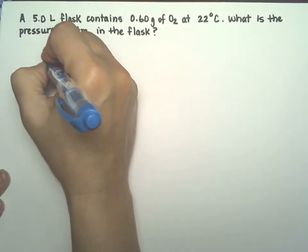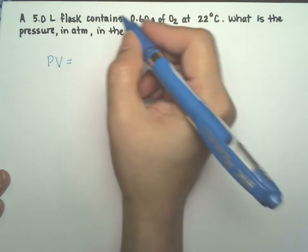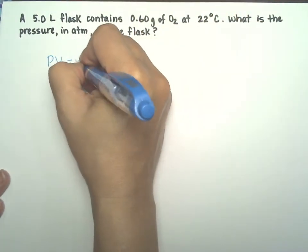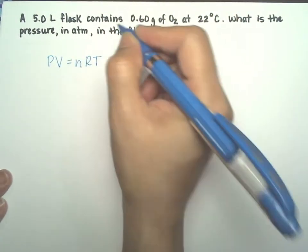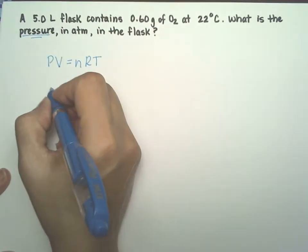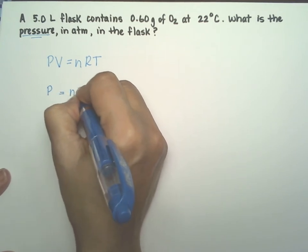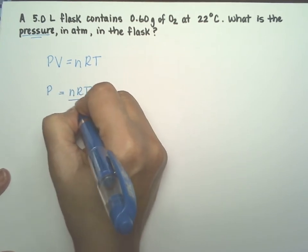This is a problem for the ideal gas equation. PV equals nRT. We're going to solve for pressure because that's what they're asking us. So we're going to get rid of the volume, passing it to the other side, nRT over V.